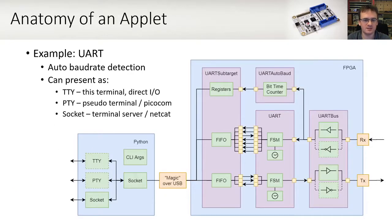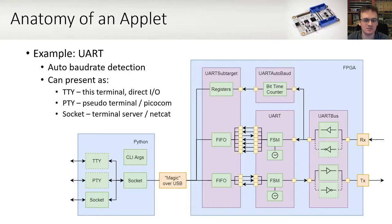Focusing in on an example applet, the UART has some really neat features. With auto-baud detection, the receive side locks onto the shortest bit time it sees, it reports this to the user, and the transmit side follows that baud rate as well. It also provides one of three interfaces. For example, TTY, which is using this terminal standard in and standard out. PTY, which allows other applications like PicoCom or Minicom to make use of this UART, as well as Socket, which acts like a terminal server, allowing applications like Netcat or other simple socket clients to use this UART as well.